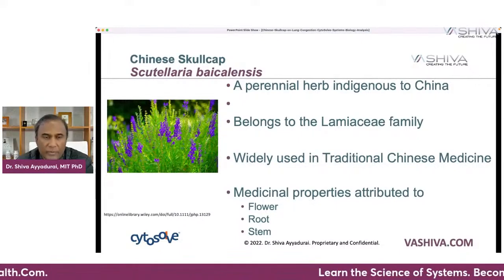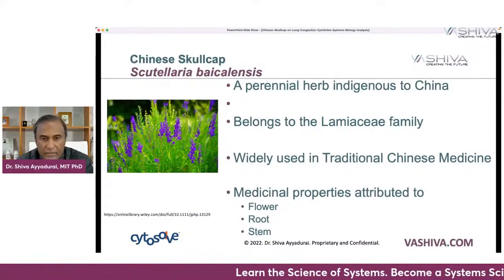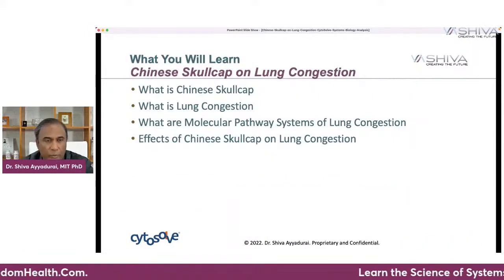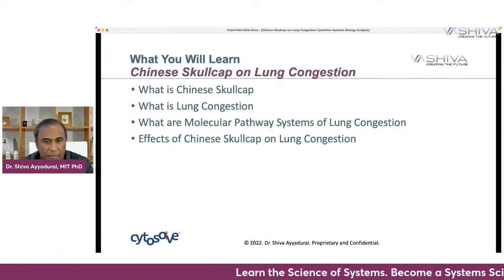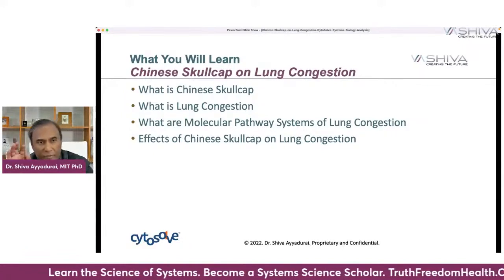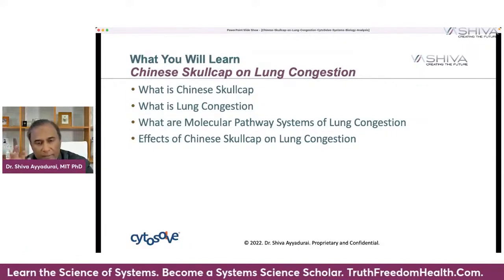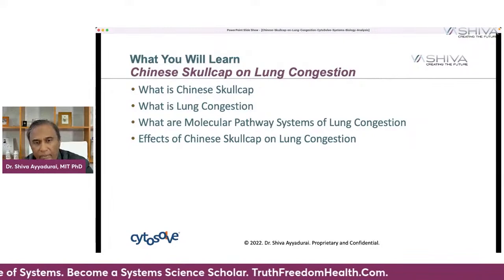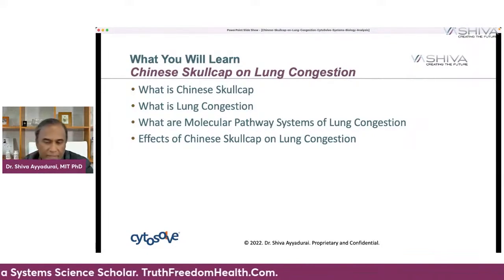The properties attributed to its benefits are the flower, the root, and the stem. We're going to review what lung congestion is, look at the molecular pathway systems of lung congestion — about five molecular systems — and then look at how Chinese Skullcap affects lung congestion.